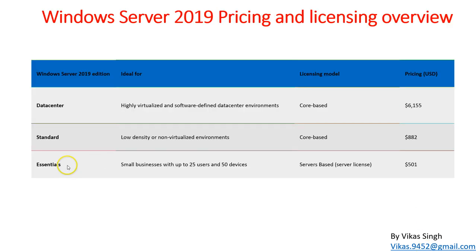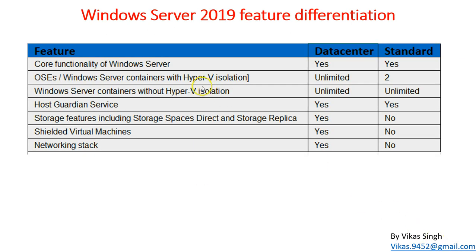Since Essentials is for small businesses, we'll focus on comparing Datacenter and Standard. The main difference between the two is the edition-specific features — both have the same core Windows Server functionality. Both editions support all roles and features available in Windows Server 2019, like Active Directory and Hyper-V. Core functionality for both Datacenter and Standard is the same.